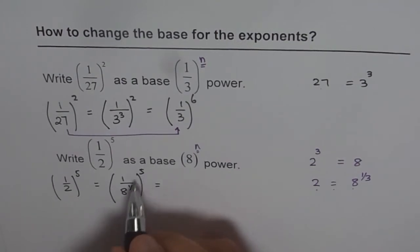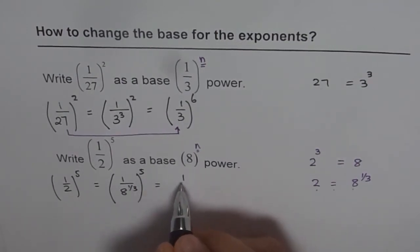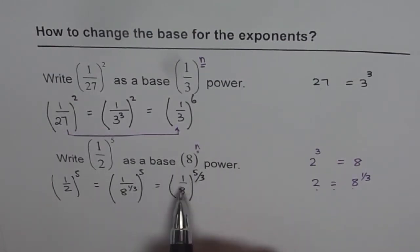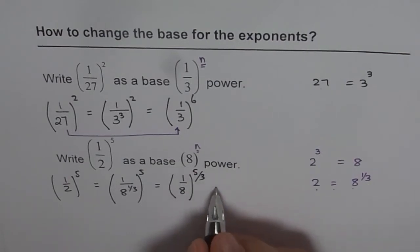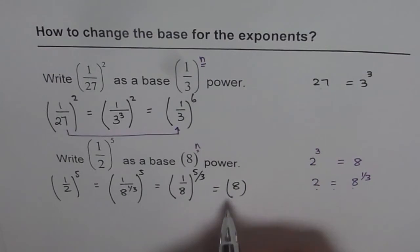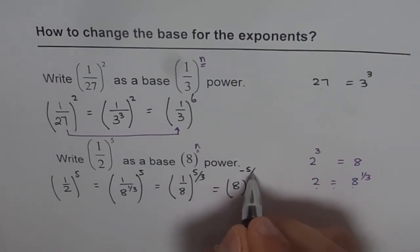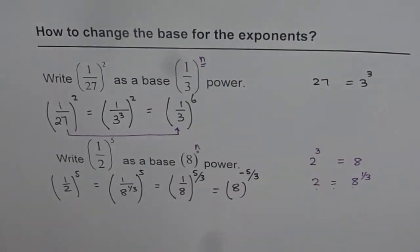Now I can multiply by 5 and what do I get? I get 1 over 8 to the power of 5 over 3. But I need to write it as 8 not 1 over 8. So that means negative, right? So that gives me 8 to the power of negative 5 over 3. So that is the answer.